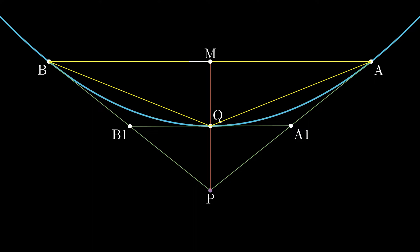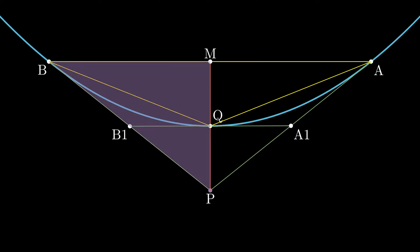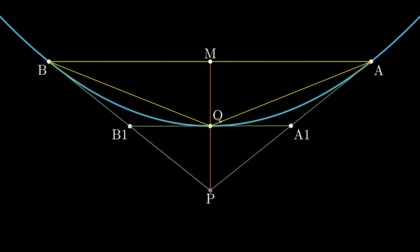Now, it can be shown that the triangles PBM and PB1Q are similar as two sides are proportional and they have a common angle. Similarity implies that the line PQ is half of PM, which also implies that PQ is equal to QM.